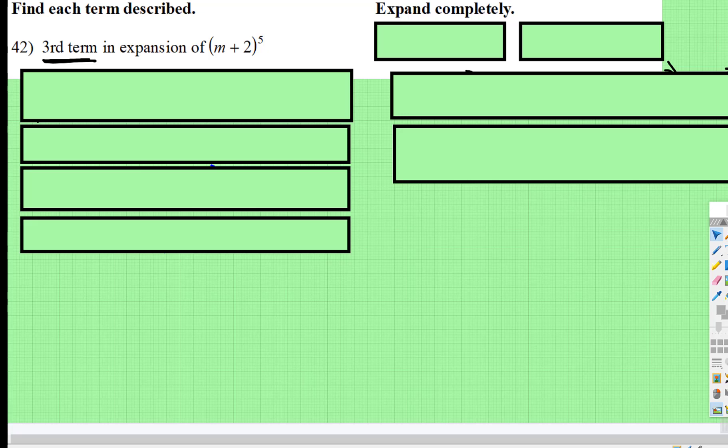The last video showed how to find the coefficient as you expand the binomial. Now I'm going to show you using Pascal's triangle how to find the entire term. So we have this binomial to the fifth.